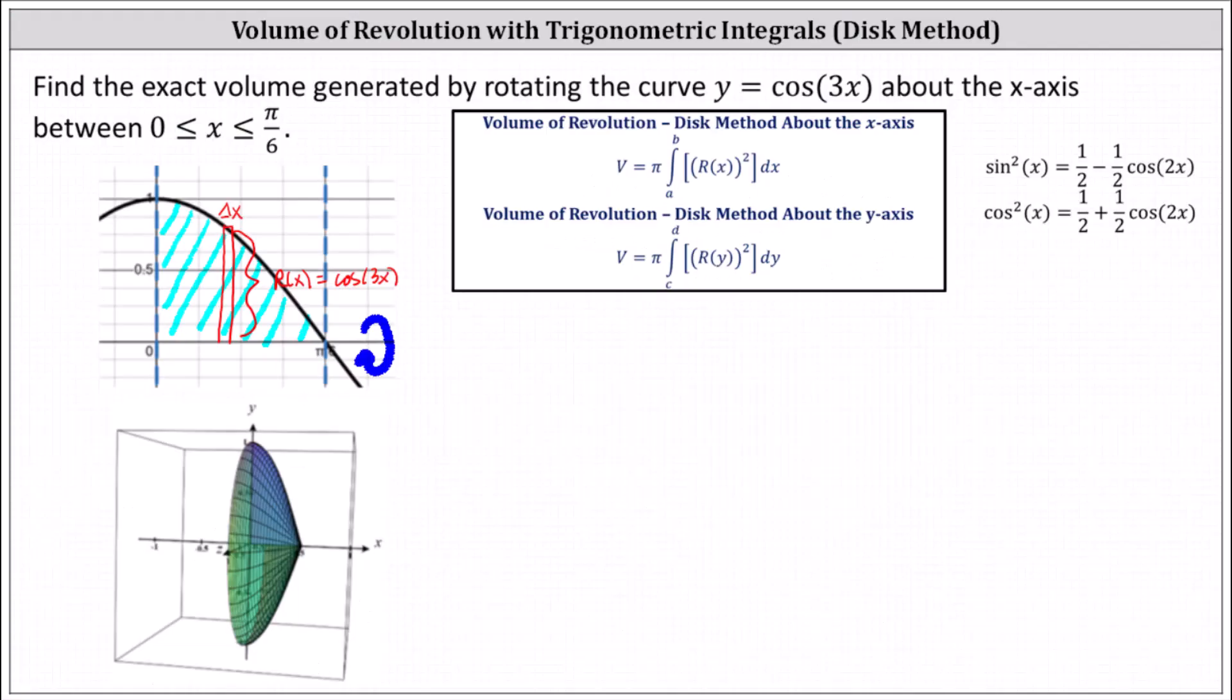Going back to our work, we have the volume v equals pi times the integral from 0 to pi divided by 6 of the square of cosine 3x. Because we have the square of cosine 3x, we'll use the power reducing formula of cosine squared x equals 1 half plus 1 half cosine 2x. Notice the angle on the right is double the angle on the left, which means you can write this as pi times the integral from 0 to pi divided by 6 of 1 half plus 1 half times cosine of 2 times 3x, or 6x, dx.